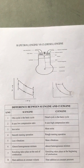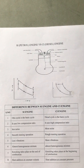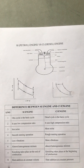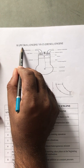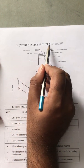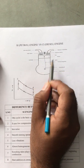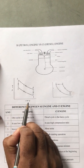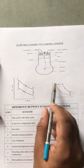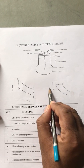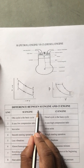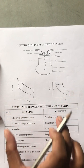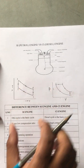Good morning. I welcome you all to the series of lectures on internal combustion engines. Today we are going to discuss the difference between SI engine and CI engine. SI means spark ignition engine, that is petrol engine, versus CI compression ignition engine, that is diesel engine. I have taken a four-stroke engine PV plot - this is the four-stroke petrol engine PV plot and the four-stroke diesel engine PV plot, showing pressure versus volume. Before going into the differences, you should know the working of SI and CI engines.